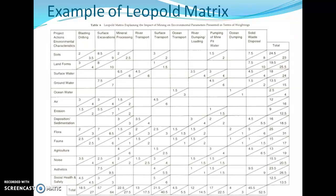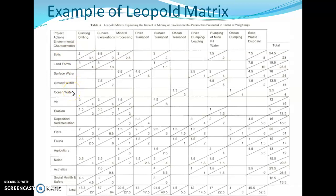One type of matrix is the Leopold matrix. You can see the table. Project actions such as blasting, drilling, surface evacuation, and mineral processing are mentioned in the rows. Environmental characteristics such as soils, landforms, surface water, groundwater, ocean water, air, and erosion are identified and mentioned in the columns. Each cell in the matrix is divided by a slash line into two sections.